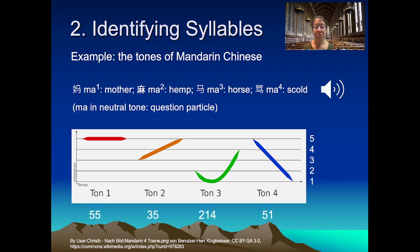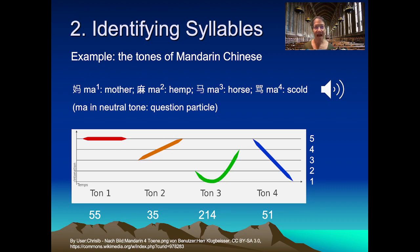Tones are also described using numbers from five (top of a speaker's pitch range) to one (bottom), allowing numeric sequences to describe contours. However, pitch is not the only prosodic element for tone. Tone three is usually low in a speaker's range, and so creaky voice is often associated with it. Factors like duration and loudness are also often correlated with changes in the pitch contour and associated with tone.